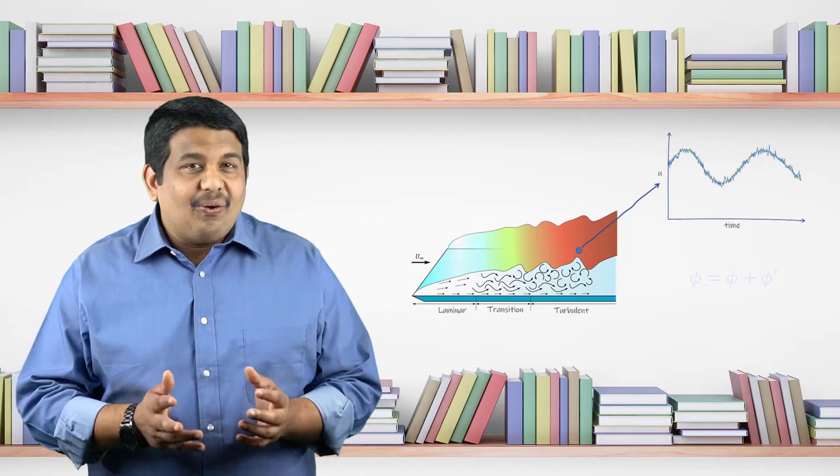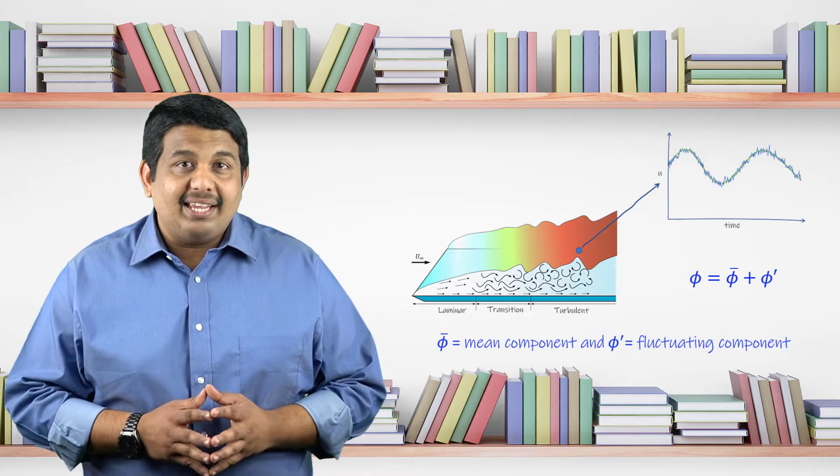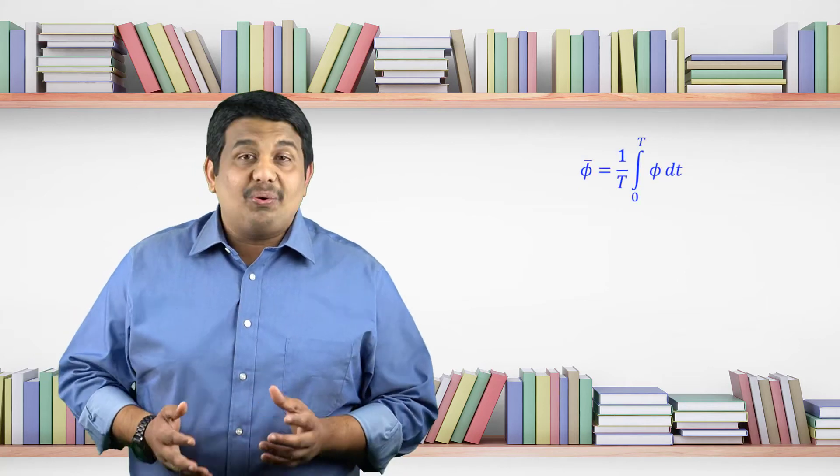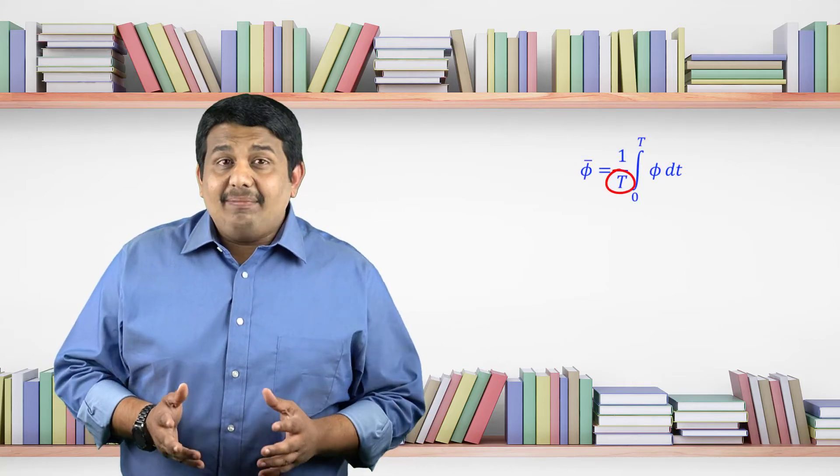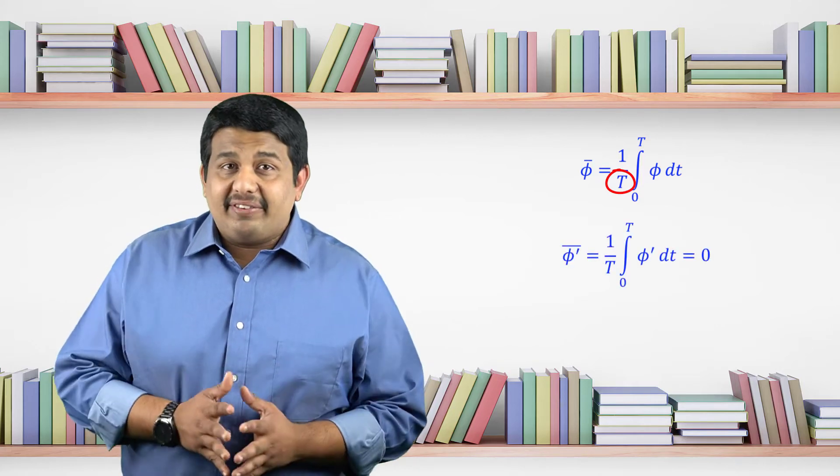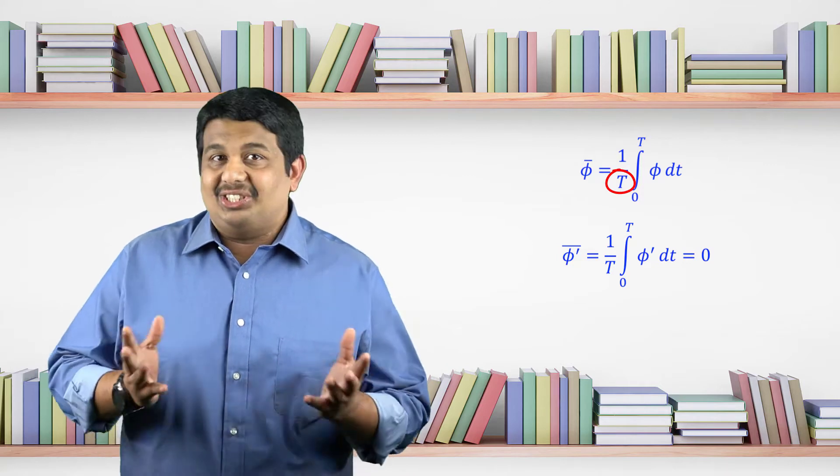For any flow quantity, this separation can be written mathematically as shown here. The mean quantity is obtained by time averaging the value of the instantaneous property over a large amount of time. This large amount of time is selected such that the time average of all the fluctuations over this range is zero.